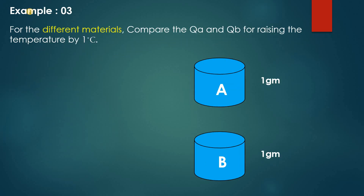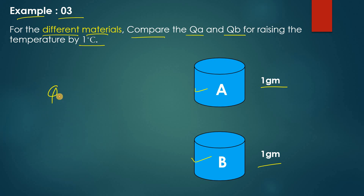There is a third example. In this example we have different materials — compare QA and QB for raising the temperature by one degree Celsius, where the mass is also the same. But the condition is that the material is not the same. What will happen is that the amount of heat required for A and for B will be different. We cannot say which one is higher because we do not have enough data, and the material is different. What we can say is QA and QB will not be equal.